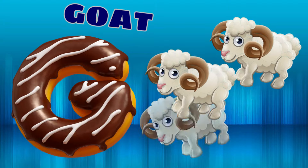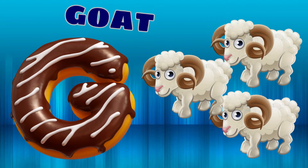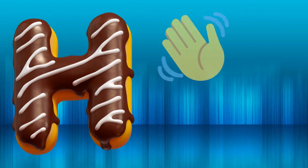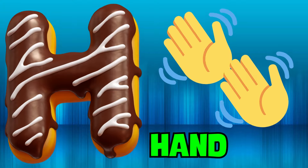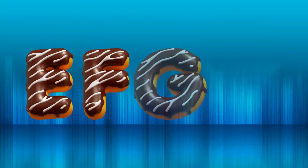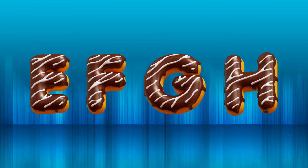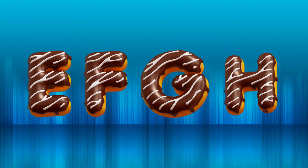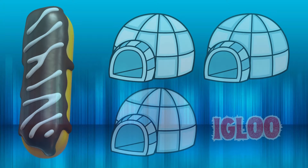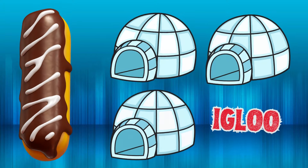G is for goat, g-g-goat. H is for hand, a-a-hand. I is for igloo, i-i-igloo.